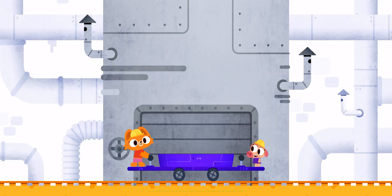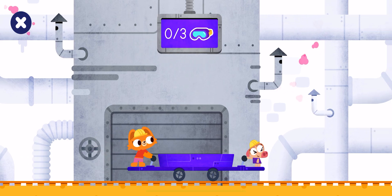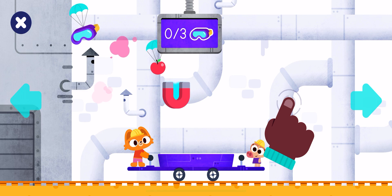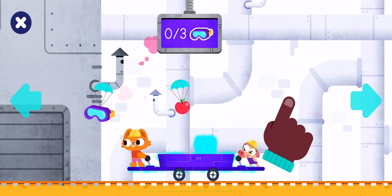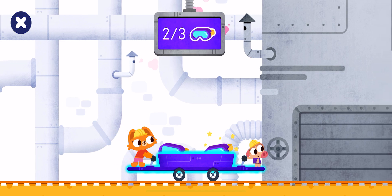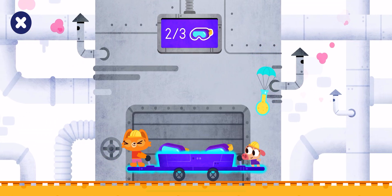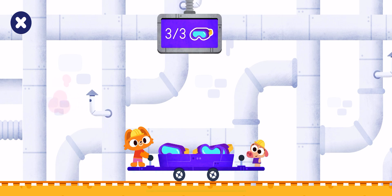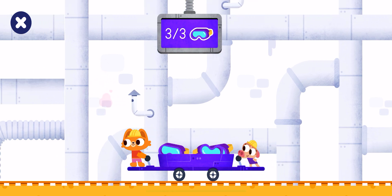We're playing in the factory today. Let's have fun together in the factory. We need to catch three pairs of goggles. Tap right to move right. One pair of goggles. Two pairs of goggles. Three pairs of goggles. Awesome! Yay!